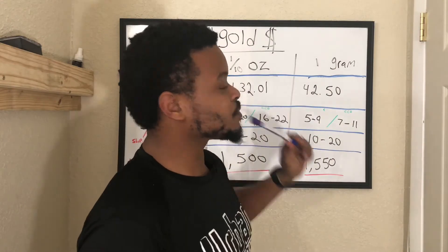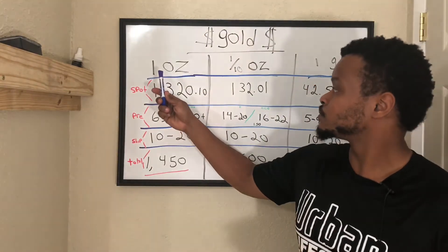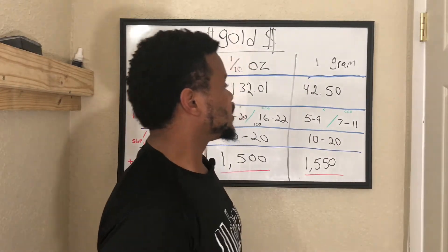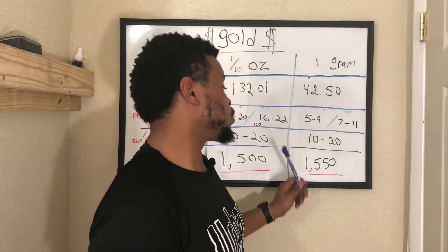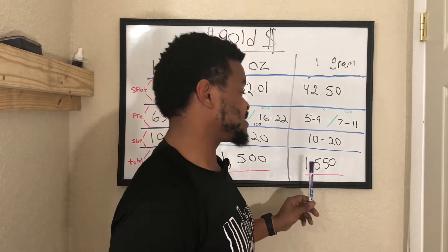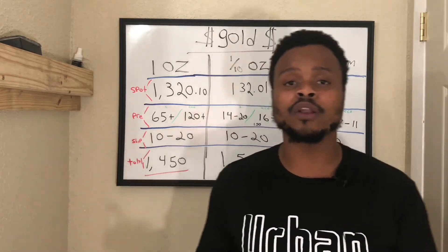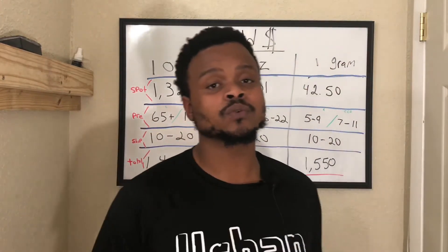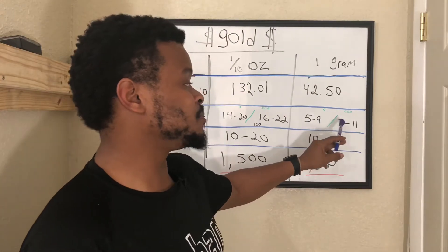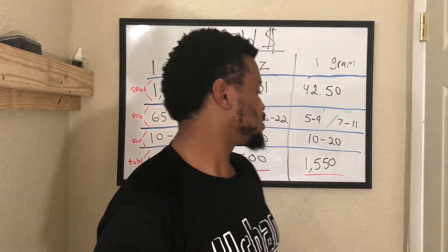For one gram of gold, it takes 31 grams to actually make one ounce of gold. So if you factor all that in and buy 31 grams, it will cost you $1,550. The benefit is you may not have the money to buy $1,500 all at once, so you can buy it in pieces. You can't wait to buy some gold and want some physical gold, so you start buying at this price. With the premium added in, it runs you about $50 to $52 extra.